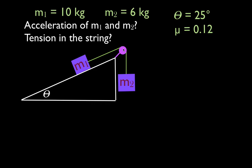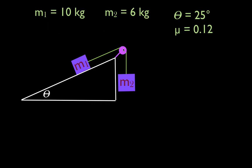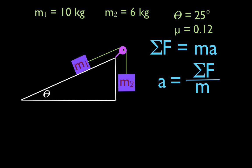In order to calculate the acceleration and the tension, we're going to use Newton's second law: the sum of the forces equals mass times acceleration. We've been given the masses, 10 and 6, but we need to sum up the forces. I'll tell you ahead of time that M1 moves up the incline plane and M2 moves down. It's important to know that because of friction — we have to know which direction the friction force is acting. So I choose up as positive for M1 and down as positive for M2.